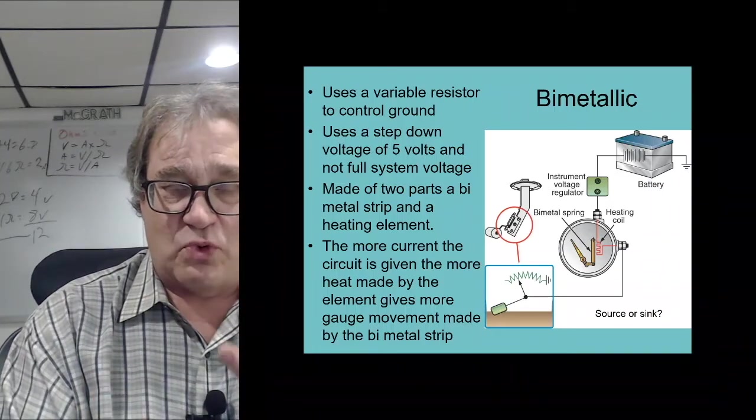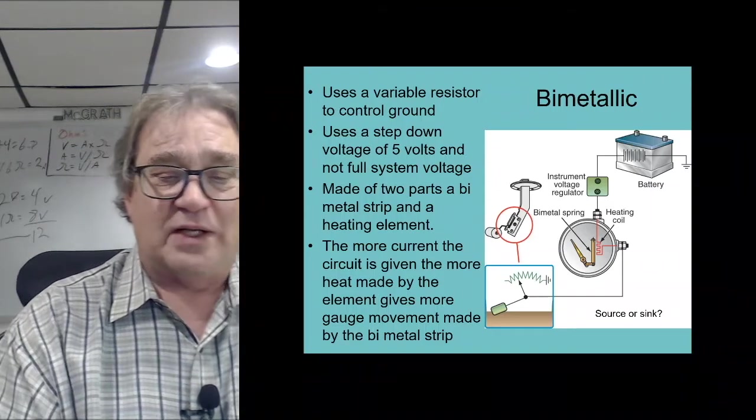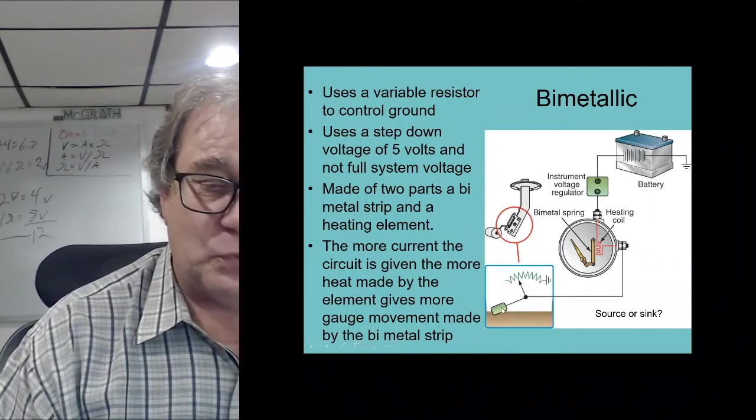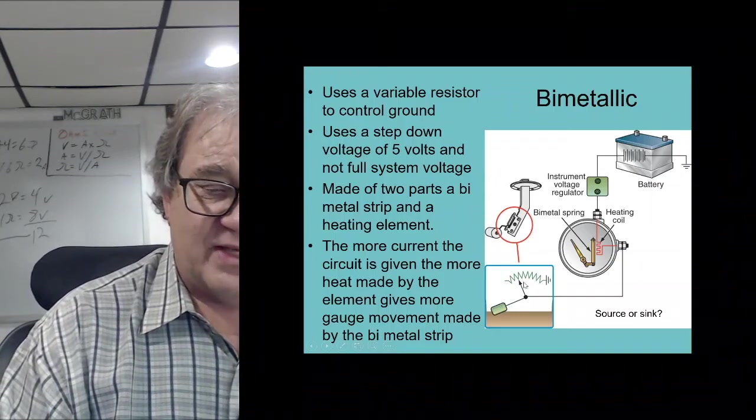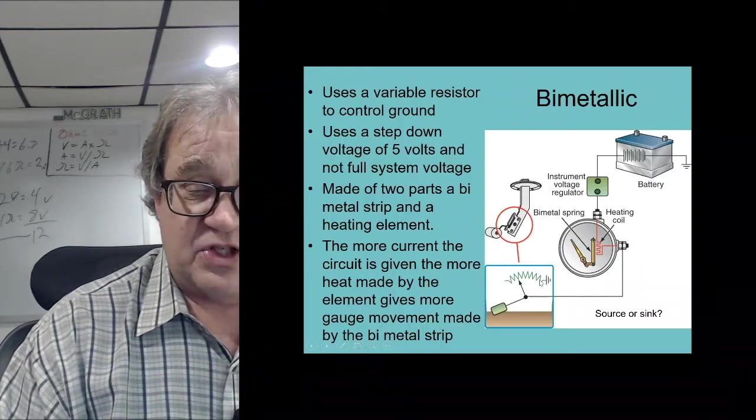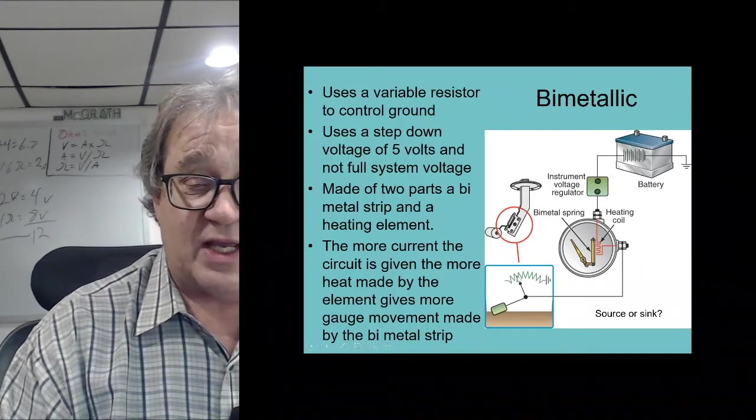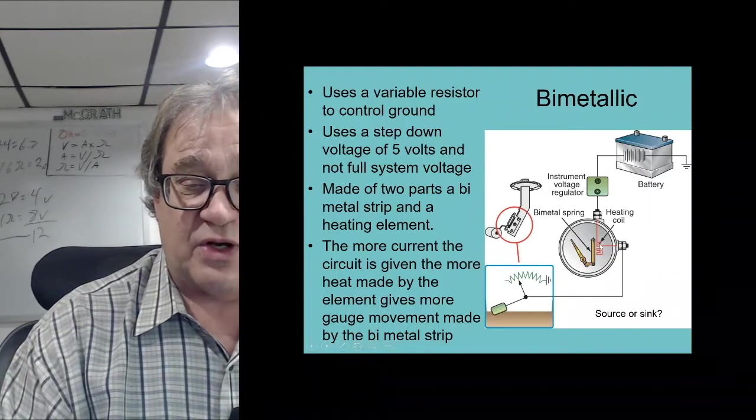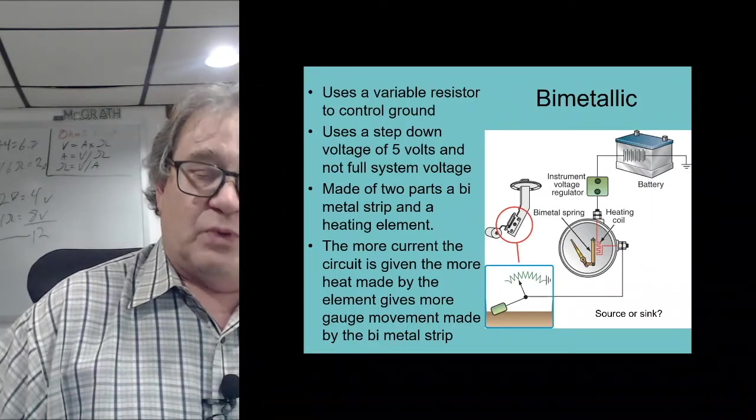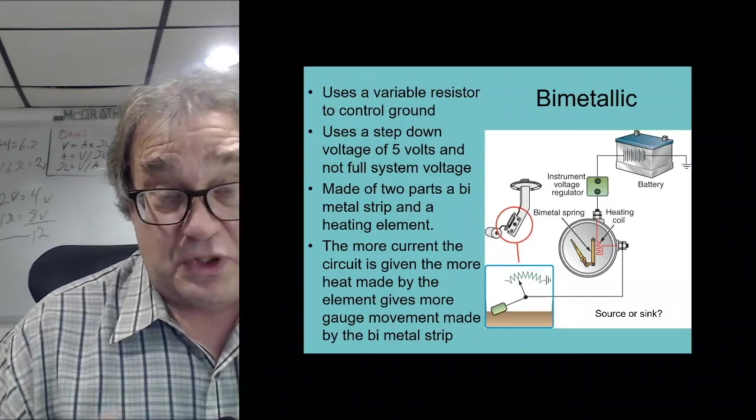What we do is - I'm picking on a fuel gauge - this guy is just a variable resistor. As the arm moves up, this guy travels and we have a voltage drop across this guy which is in series with our heating coil. This varies the current going through our heating coil, which varies the amount of heat, which varies the amount that the thing bends.